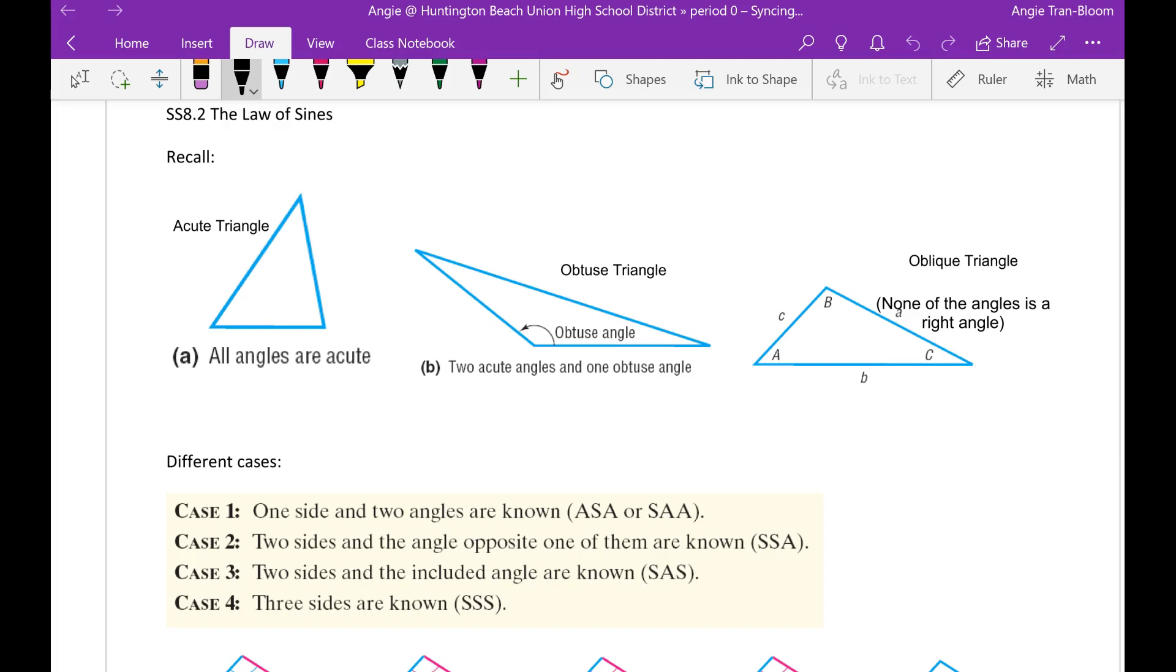Then the next triangle you have is called an obtuse triangle. That means one of the angles is going to be bigger than 90 degrees. Then the next one is called the oblique triangle. That means none of the angles is a right angle. So oblique triangle means none of the angles is a right angle.